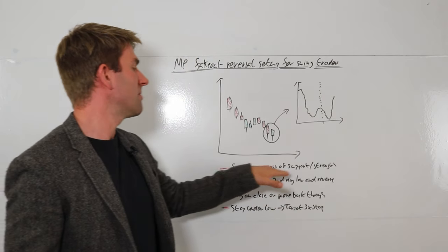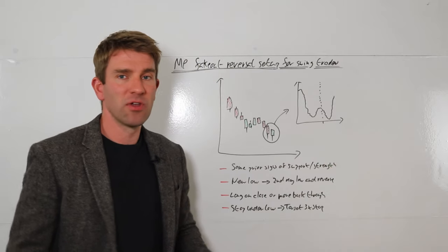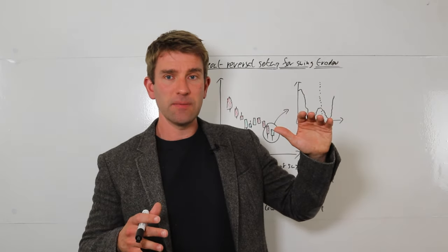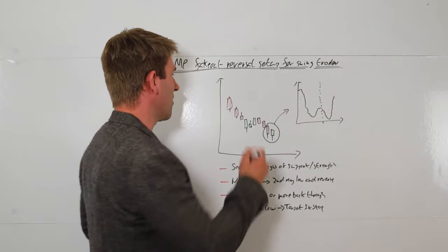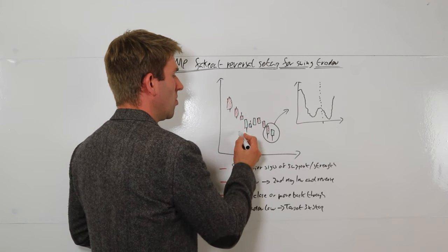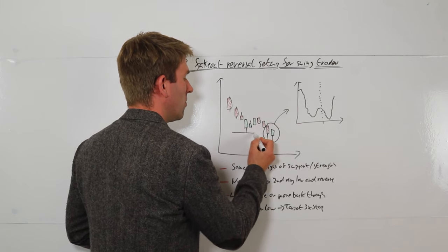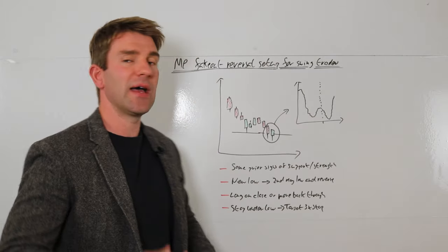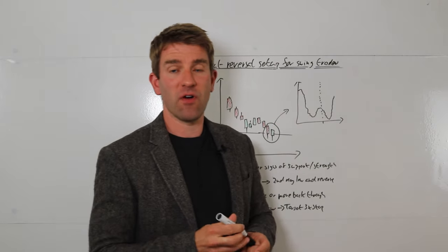Number one is we have to have some prior signs of support or strength. So we're not looking to trade this in a downtrend. We're looking to trade this in either a range bound condition or we've had some prior support before, or we have a situation where we're pulling back after a drive high.